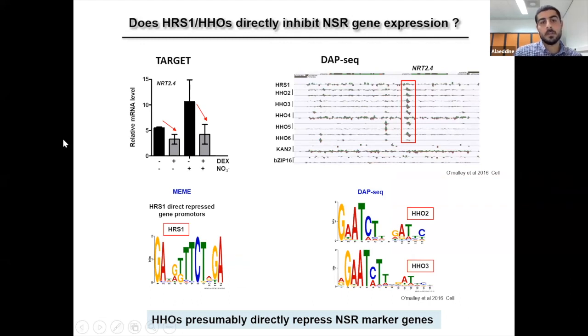According to our TARGET data, this is a direct repression since this approach of TARGET allows the detection of direct targets of transcription factors. We also found in the data that NRT2-4 and other NSR marker gene promoters are specifically enriched with HHO proteins, which is not the case, for example, for other GARP transcription factors, which is called KANADI or another unrelated bZIP transcription factors.